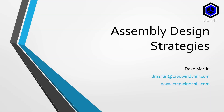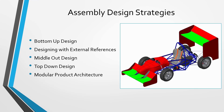In Creo Parametric, there are different strategies that you can take towards the design of assemblies, and they have their different uses, pros, and cons. In this video, we will take a look at five of them: first, bottom-up design; second, designing with external references; third, middle-out design; fourth, top-down design; and finally, modular product architecture.